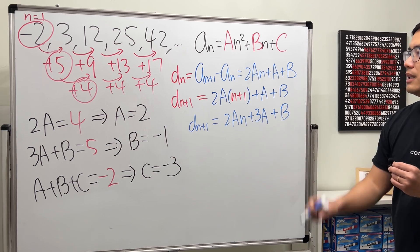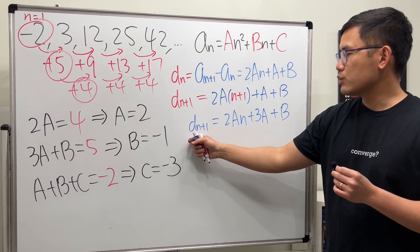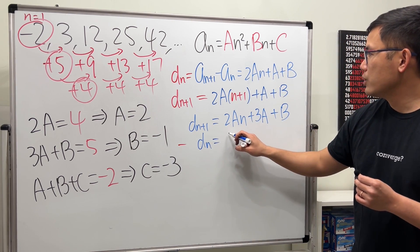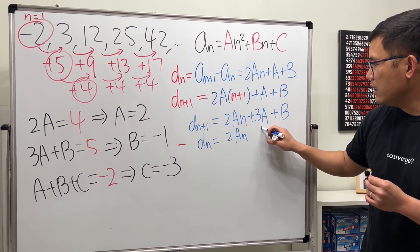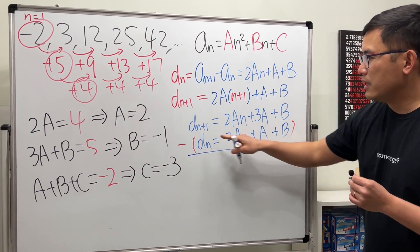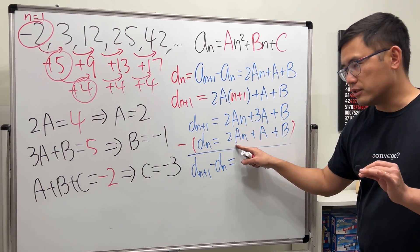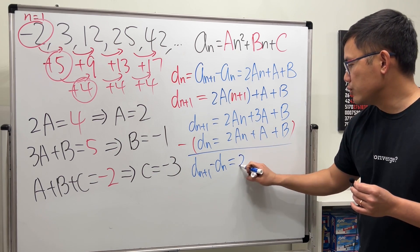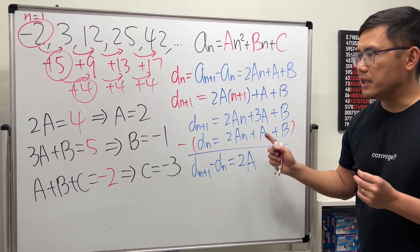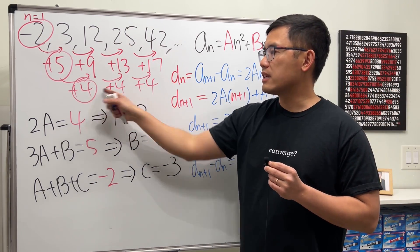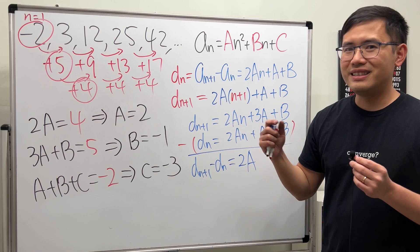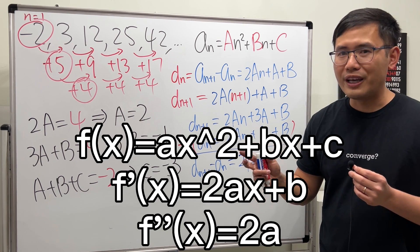Subtracting d_n from d_{n+1}: the 2an terms cancel, the a and b terms cancel, and we're left with just 2a. Since this has no n in it, the second difference is constant and equals 2a — just like the second derivative of a quadratic function being 2a, if you've done calculus.